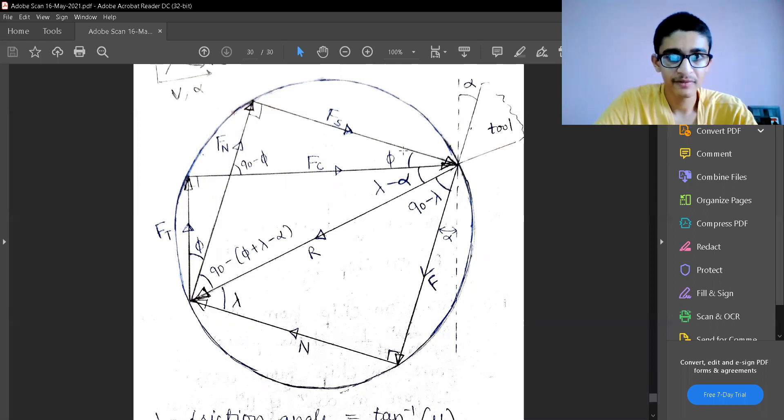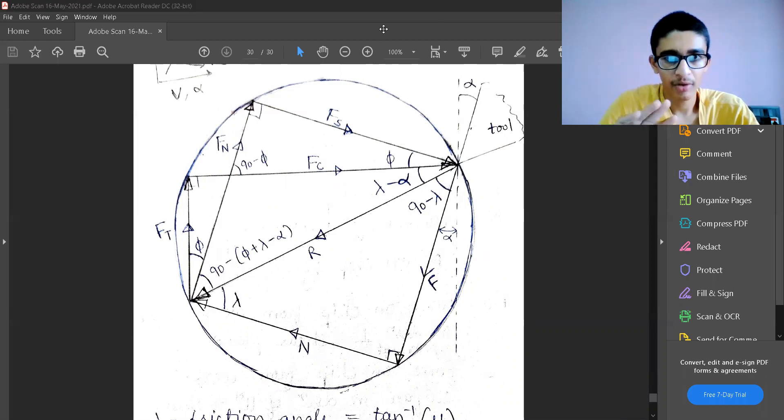If you remember this, you are done with Merchant solution completely, and even the orthogonal and non-orthogonal machining part completely. You will not forget any of the formulas if you have this single formula or circle known to you.